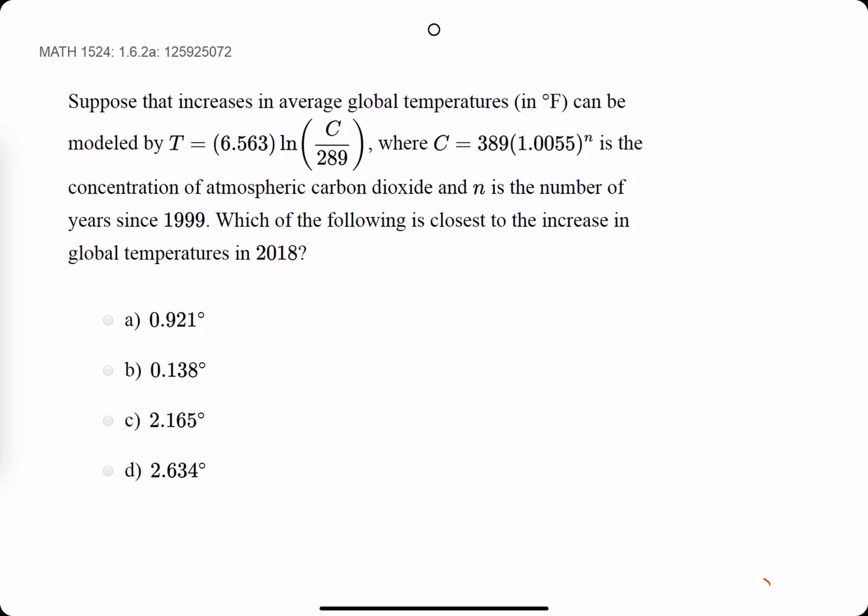This problem, a big word problem, they say the increases in global temps can be modeled by T equals blah, blah, blah, where C equals blah, blah, blah, is the concentration of the carbon dioxide and N is the number of years since 1999.